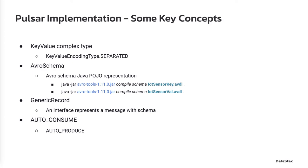Luckily, the Apache Avro project has a tool that can automatically generate the Java POJOs from the Apache Avro definition file. The examples of how to do so are included on this page. There are also some other concepts like generic record, auto-consume, and auto-produce in Pulsar that can help you simplify Avro schema processing.